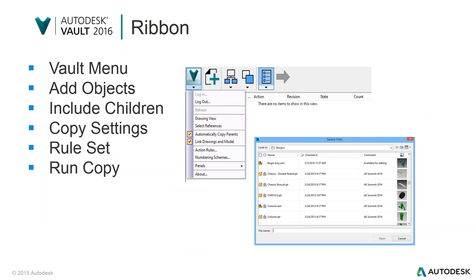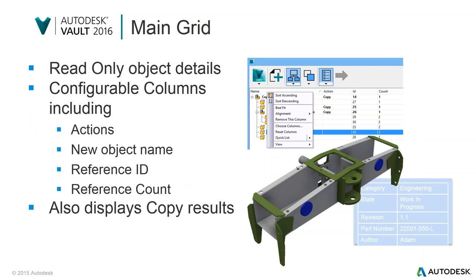One of the key things they've done is that in the old copy design, you would pick an assembly and that would be it — you could only copy everything on that assembly. Whereas now you can actually copy a complete folder, copy any file type — not just Inventor files — you can do Word, PDFs, drawings. It's really robust in that sense. You can include all children, set some rules, and then the big action is to execute the copy.